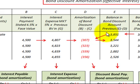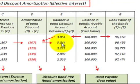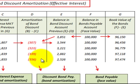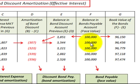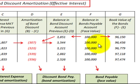Now you reduce your balance in your bond discount by that $307 amount. By reducing this bond discount, it actually increases the book value. So our book value increases by the amount of this discount amortized, and our discount amount decreases accordingly. At the end of the first period, you have the $100,000 in bonds payable reduced by the discount amount, which was reduced again by that amortization amount, leaving an increased bond book value.